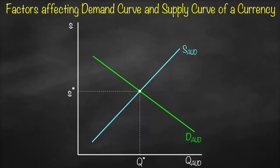Some students try to memorize what factors shift the demand or supply curve to the right or left. As promised, you don't need to memorize anything — you just need to understand. I'm linking exchange rate with balance of payments. Any item under current account or capital and financial account that results in an inflow will affect the demand curve, and any item that results in an outflow will affect the supply curve.